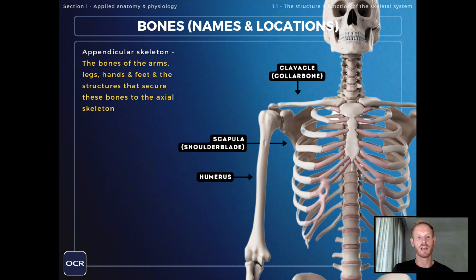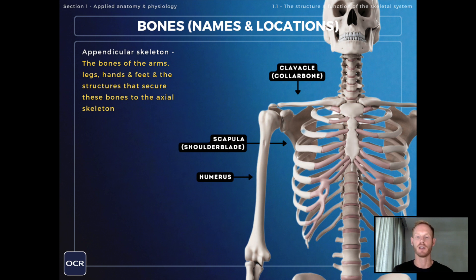Next, the bones of the appendicular skeleton — the bones of the arms, legs, hands and feet, and the structures that secure these bones to the axial skeleton. We'll begin with the three bones that articulate or join together to form the shoulder joint: the clavicle or collarbone, the scapula or shoulder blade, and the humerus.